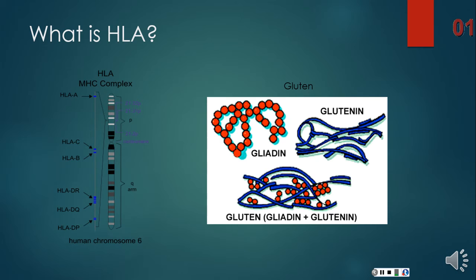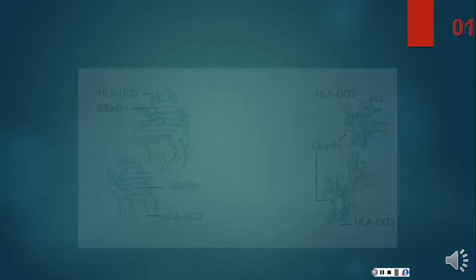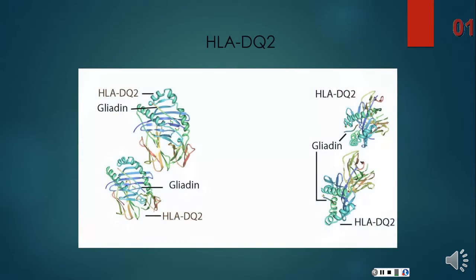That's where the HLA-DQ2 molecule comes into play, as it correlates with celiac disease. In fact, the HLA-DQ2 heterodimer is prevalent and present in 90% of patients with CD, or celiac disease.